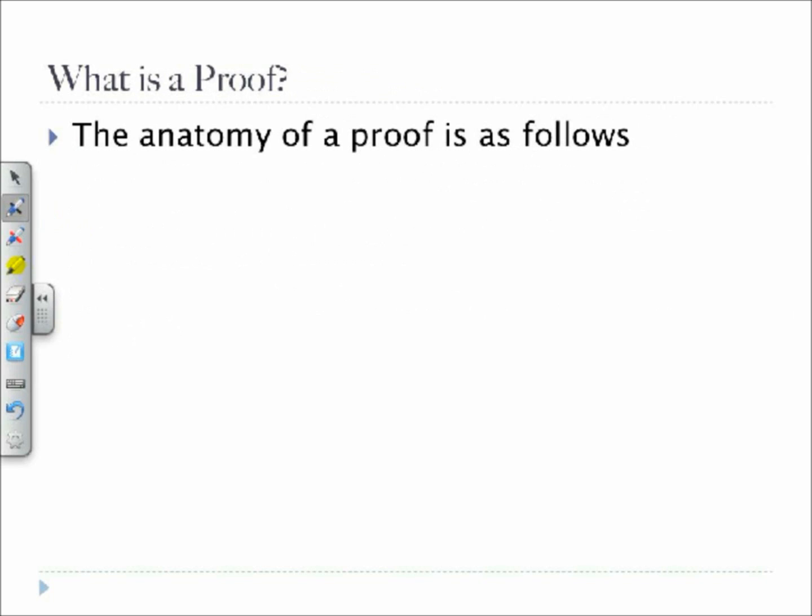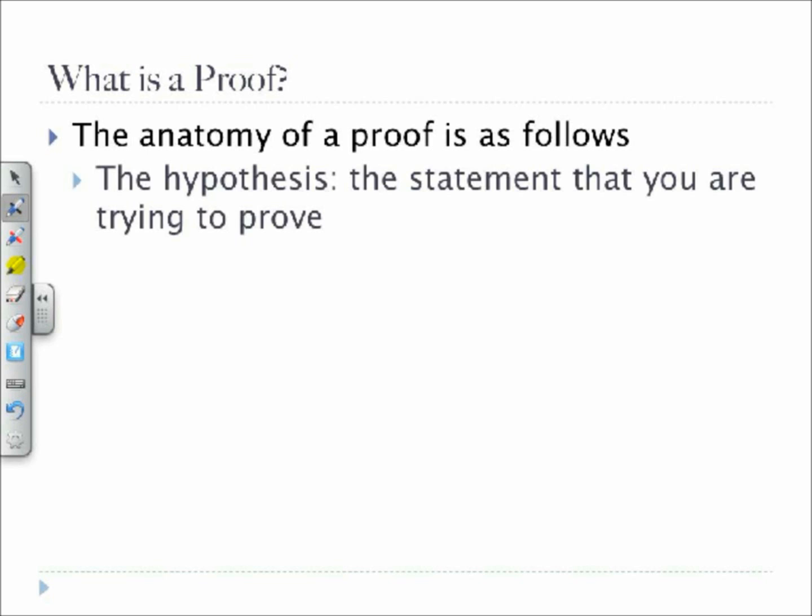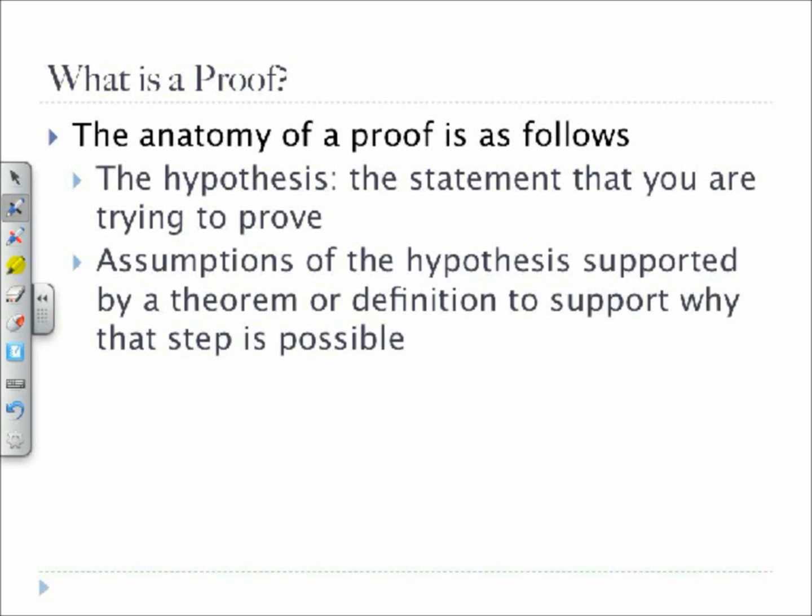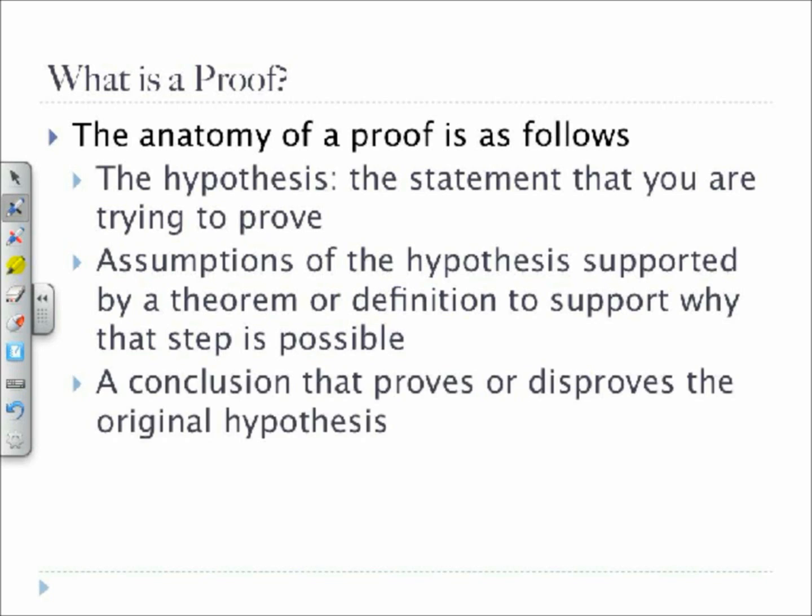So what is a proof? Simply, a proof is a written report of a thought process that is used to reach a final conclusion. The anatomy of a proof is as follows. First, we have the hypothesis, the statement that you are trying to prove. Second, we have assumptions of the hypothesis supported by a theorem or definition to support why that step is possible. And third, a conclusion that proves or disproves the original hypothesis.